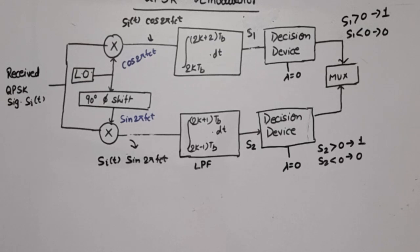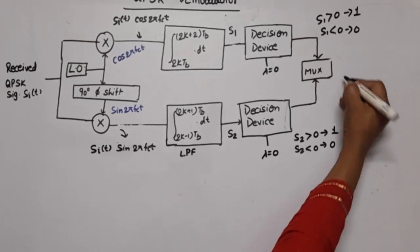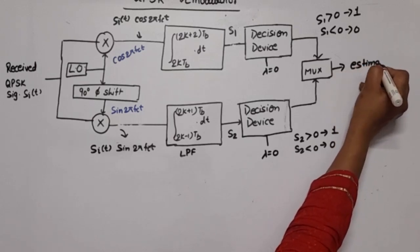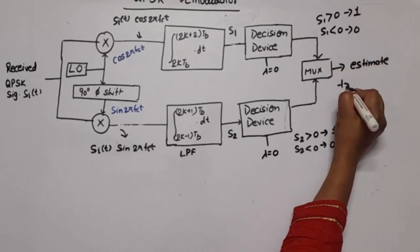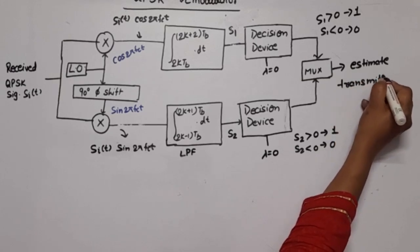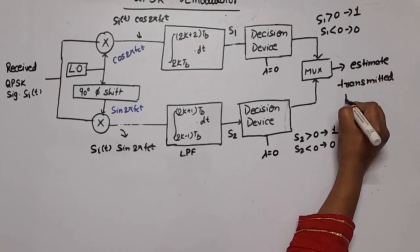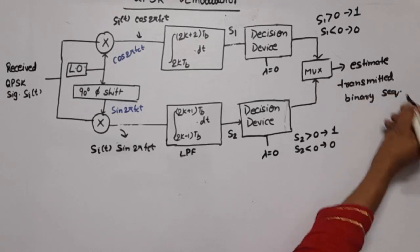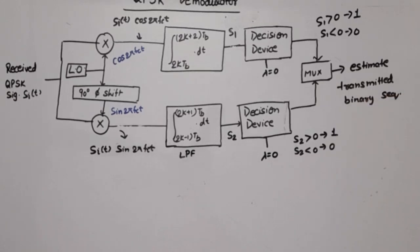The output of these decision devices is applied to a multiplexer which combines both bits, and we get an estimate of the transmitted binary sequence that was transmitted from the transmitter.